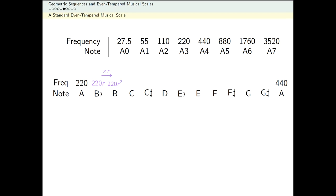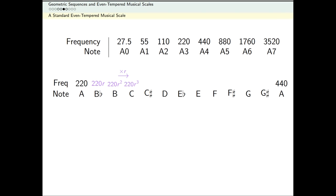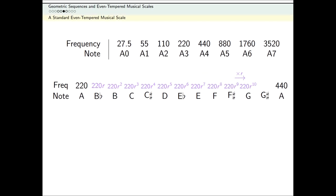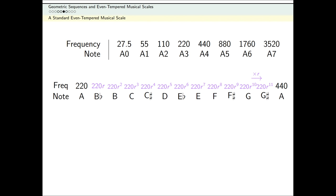To get from each note to the next, we go up in the same way. So the frequency associated with this second note A should be 220 times R to the power 12.